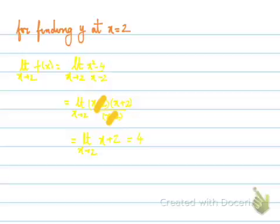We write 'lim' (limit notation), with x approaching 2, of (x² minus 4) over (x minus 2). Using the difference of squares formula (a² minus b²), I factor the numerator as (x minus 2)(x plus 2). There is a common factor (x minus 2) in the numerator and denominator which we cancel. Thus we get limit as x approaches 2 of (x plus 2), and substituting x equal to 2 gives 4. Using limits, we also get 4, which matches our neighborhood approach.